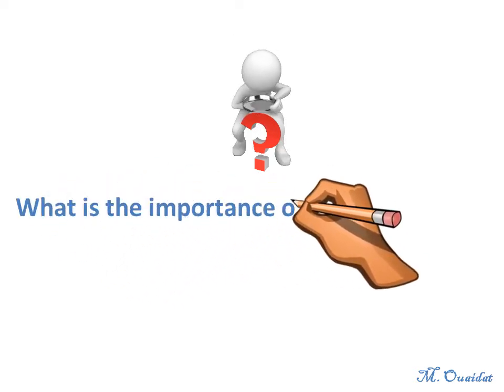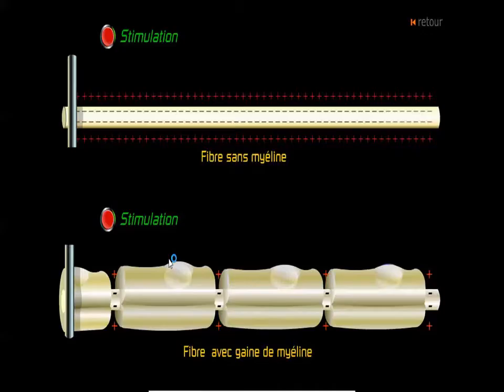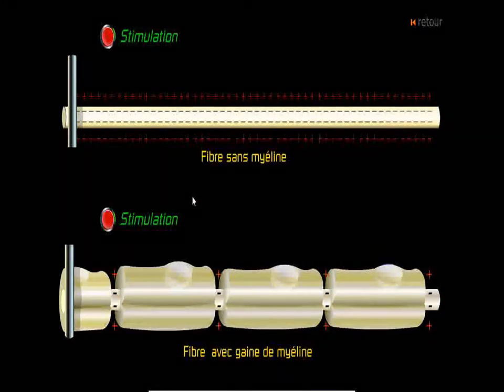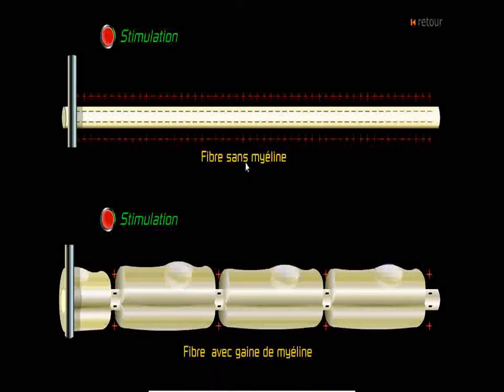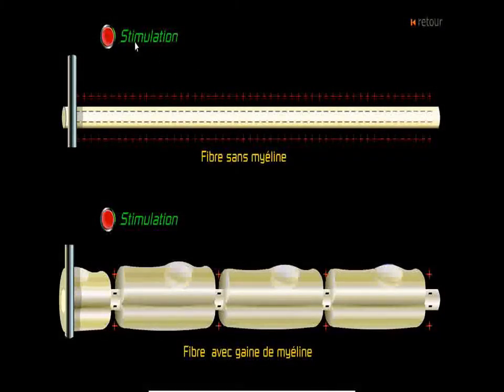What is the importance of myelin sheath? Okay, in this animation we make a simulation for a fiber without myelin sheath and for another one with myelin sheath, and I will show you the propagation of the nerve message along these fibers. Let's make a simulation, a simulation or electric simulation.